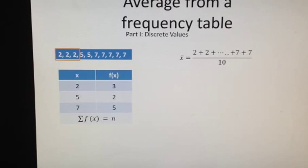Now, 2 appears 3 times, 5 appears twice, and 7 appears 5 times. So we can use multiplication of x and f of x. And this same formula is becoming a very simple formula of the product of x and f of x: 2 times 3 plus 5 times 2 plus 7 times 5.